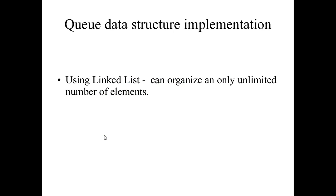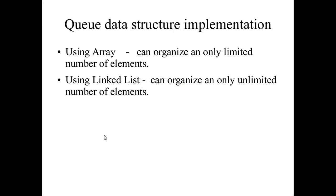The queue data structure can be implemented in two methods: one is using an array and another is using a linked list. If you have a fixed queue size, you can go for the array. For example, if you have only a hundred elements, you can use an array — it is for a limited number of elements. A linked list is for an unlimited number of elements; in that case, you can use the linked list.